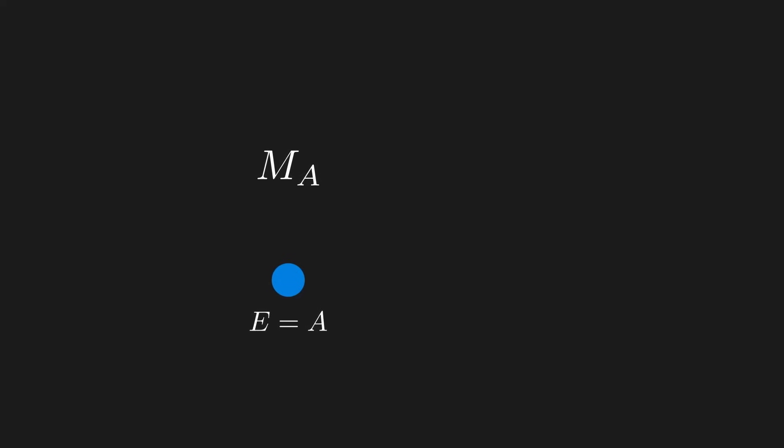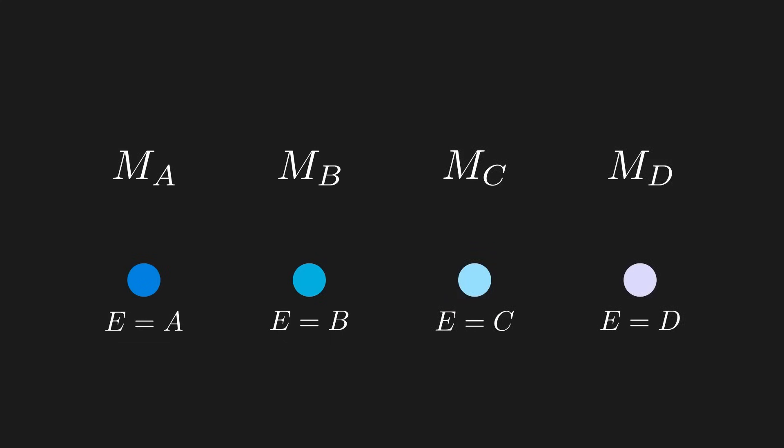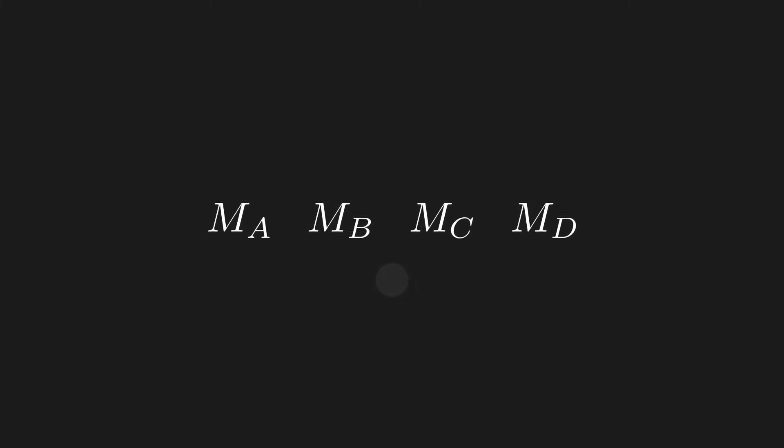Now if the particle has energy B, then it is represented by mathematical object M sub B, and so on and so forth. So we have a mathematical object M for every possible outcome we could get for a particle. Somehow, our particle is represented by an amalgamation of all these mathematical objects, holding onto each outcome until we make a measurement.